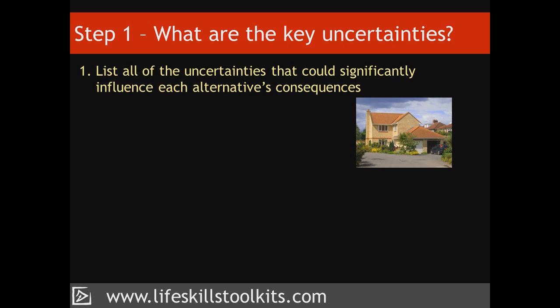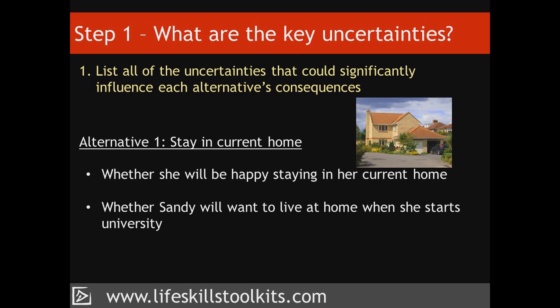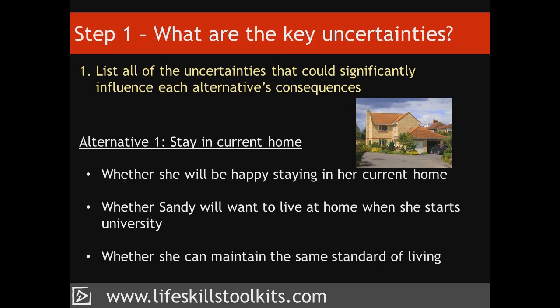The first thing Franny needs to do is list all the uncertainties that could significantly influence the consequences for each of her alternatives. When it comes to her first alternative – remaining in her current home – Franny realises there are three things on her mind: whether she will be happy in her current home surrounded by reminders of her marriage, whether Sandy will want to stay with her when she starts university, and whether she would be able to have the same standard of living due to the remaining mortgage and cost of maintaining the house.